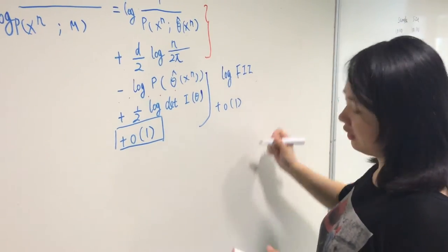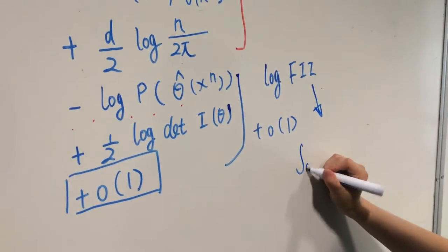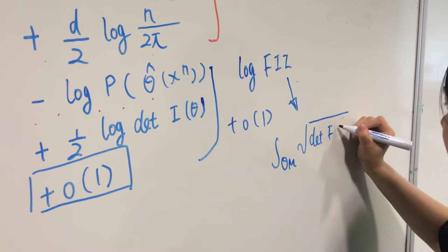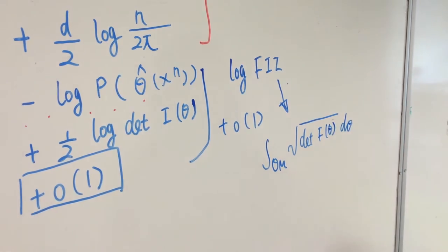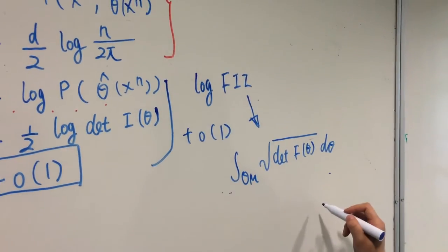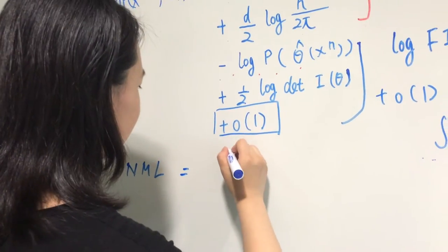The log fii is the integral of square root of determinant of Fisher information matrix, which does not depend on theta. We call this Fisher information approximation.